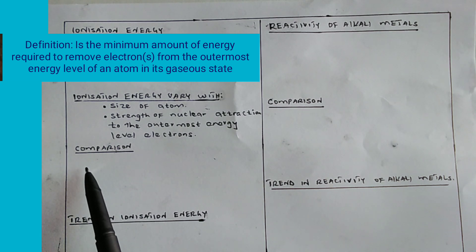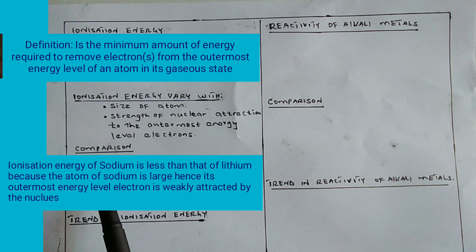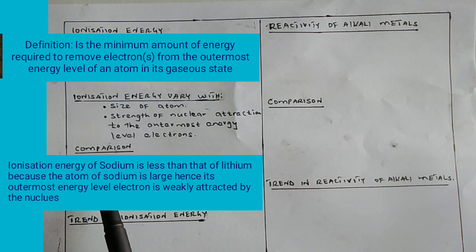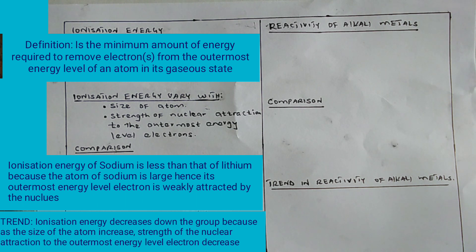If you are asked to compare the amount of energy required to remove the electron in sodium and lithium, you would say the ionization energy of sodium is less than that of lithium, because the atom is larger, hence its outermost energy level electron is weakly attracted and is easily lost. The trend is that ionization energy of alkali metals decreases down the group. The reason is that as the size of the atom increases, the strength of the nuclear attraction to the outermost energy level electrons decreases.